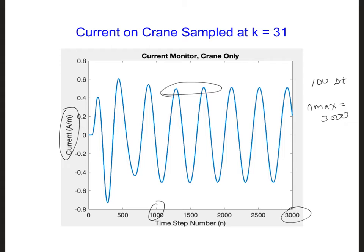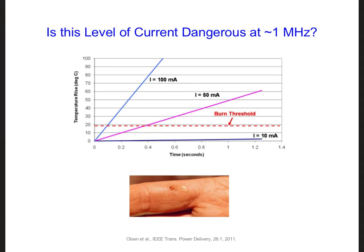This current density will be localized primarily just on the outside of the person's body because of the skin effect of the person's skin and tissue. This in turn creates a very high specific absorption rate, or SAR, that can cause a rapid temperature rise on the person's hand or whatever is in contact with the crane. But it depends on the person's reaction time and how long they are exposed to that level of current.